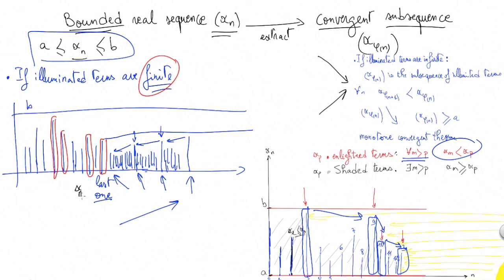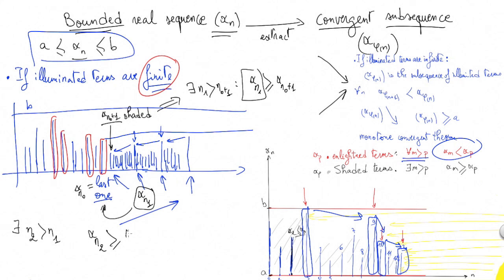Let's call xn0 the last illuminated term, so that xn0 plus 1 is shaded. As xn0 plus 1 is shaded, there exists a term higher than n0 plus 1, so that xn1 is shading xn0 plus 1. This would be xn1. And as xn1 is also coming after the last illuminated one, there exists n2 coming after n1, so that xn2 is shading xn1. This would be xn2, etc.